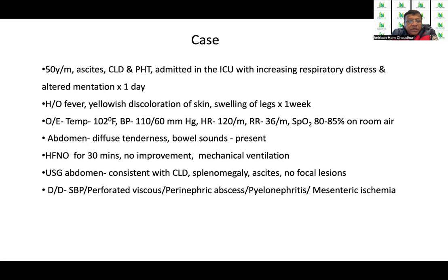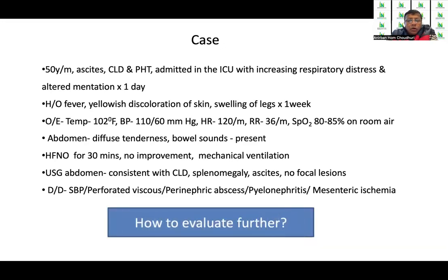Other than SBP, there can be perforated hollow viscus, perinephric abscess, pyelonephritis, or mesenteric ischemia — what we call NOMI in critical care, that is non-occlusive mesenteric ischemia. With all of these possibilities in a patient who is elderly and has comorbidities, how do we evaluate further?